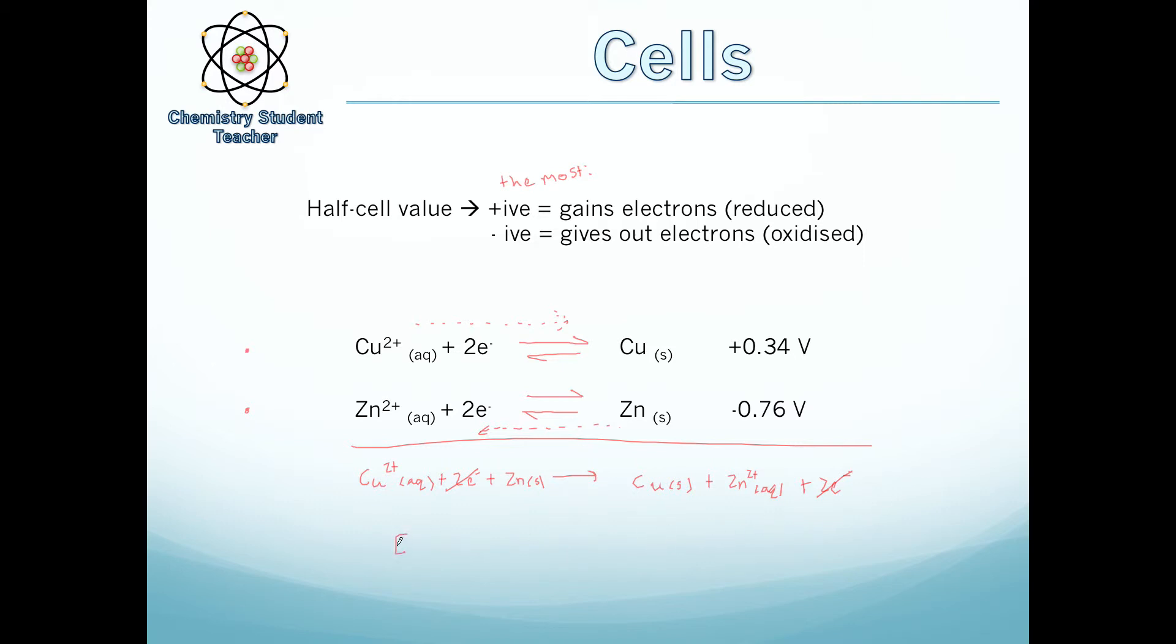And the E cell, which is E overall, the overall voltage output for this cell would be 0.34 minus negative 0.76 volts. That's what it would be. So what you have to do in this case is basically just take the difference between the two values. So that's just the same as saying 0.76 plus 0.34. If you put that in your calculator you would get 1.1 volts. So that would be the E cell value, the voltage output of this cell.